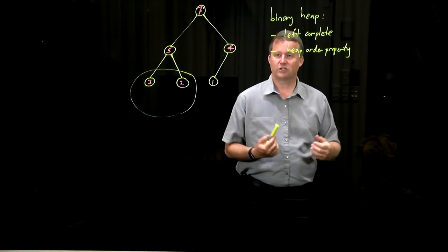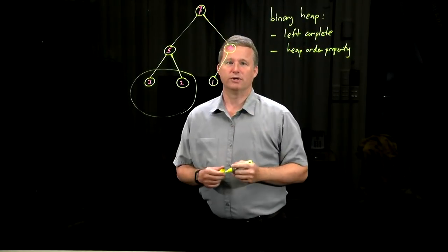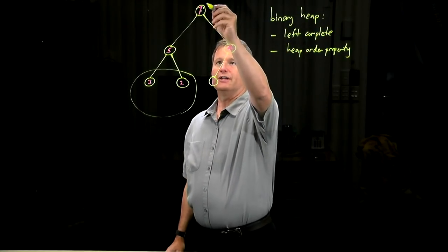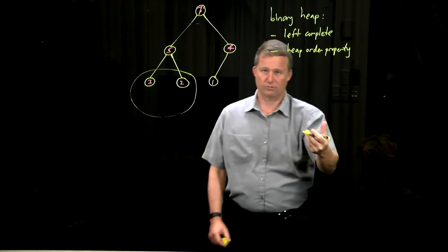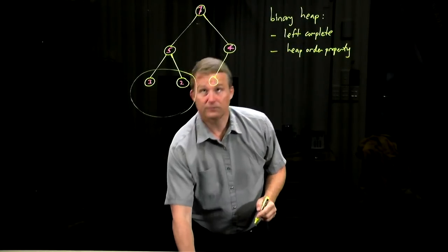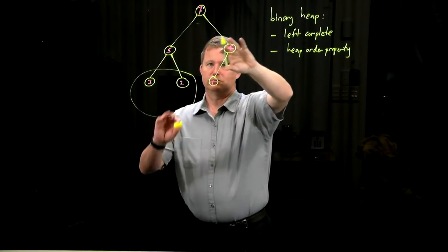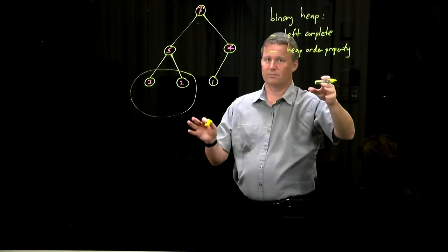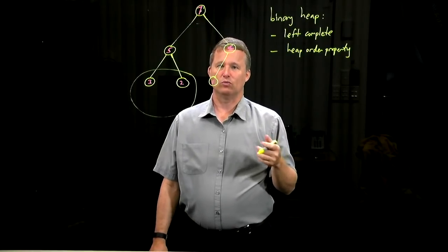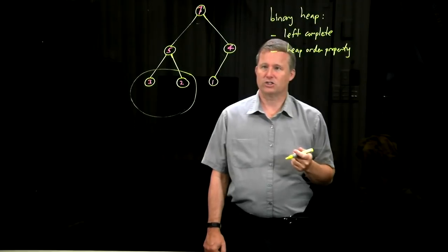Suppose we have such a tree. It's pretty easy to see that the deletion should be quick or at least finding the maximum is quick. So finding it's always at the root. So you just go straight to the root. But then if you want to delete it, then we have a problem. Because deleting that will obviously, if we remove the node, would completely disconnect the tree and make a mess.